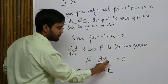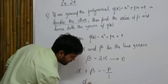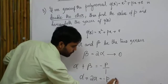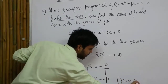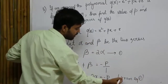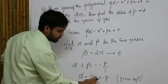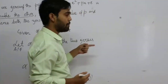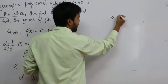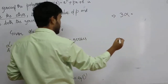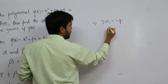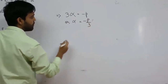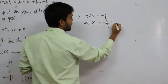From equation one, beta equals 2 alpha, so substituting: alpha plus 2 alpha equals minus p, which gives 3 alpha equals minus p, therefore alpha equals minus p by 3. I am naming this as equation 2.